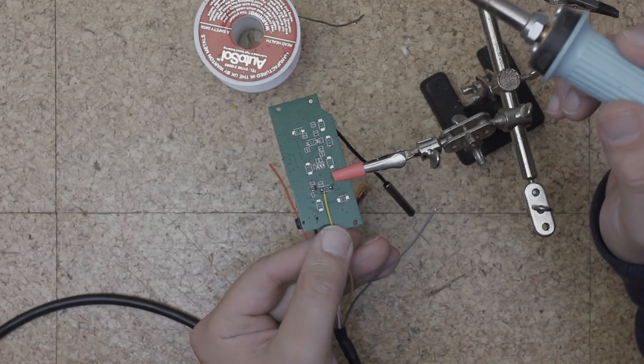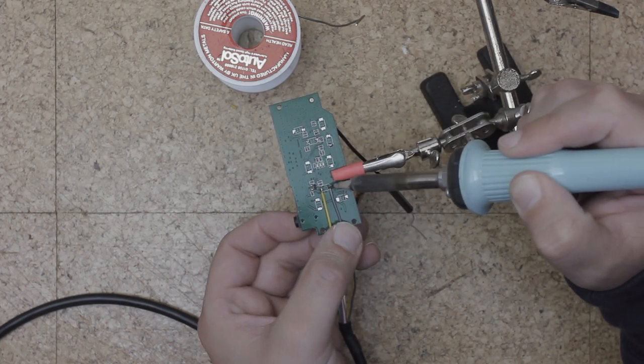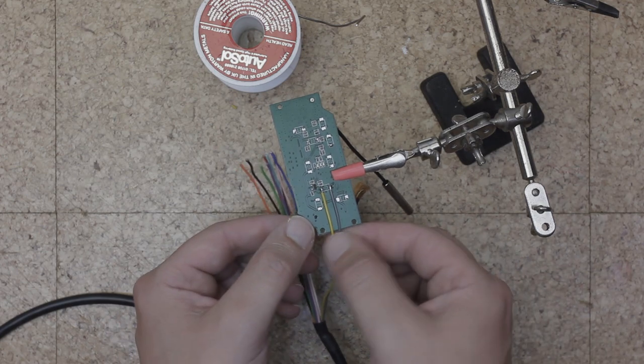Yellow and grey I decided were going to be for my on button. No real reason apart from these two wires were next to each other coming out of the sheath. This is the official tug test.